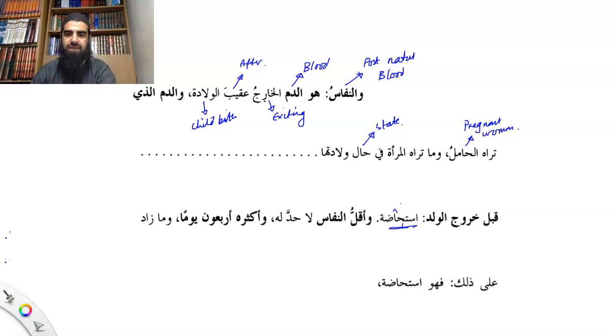Wilada we've done that. Khuruj is exiting. Istihadah we've done that before, you guys should know that. Aqal we've done that as well. Had, it means limit. And aqsar most. Arba'oon forty. So a lot of these words we've covered them before, but you might need a refreshing.